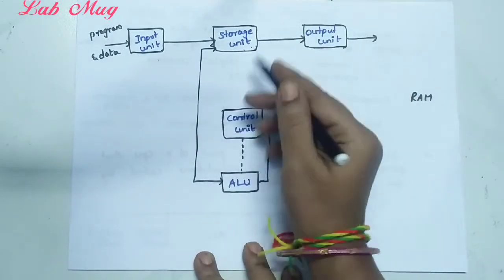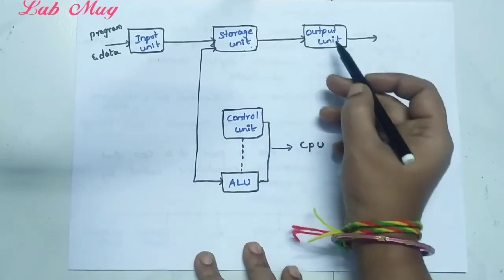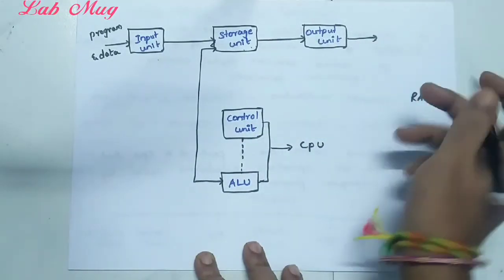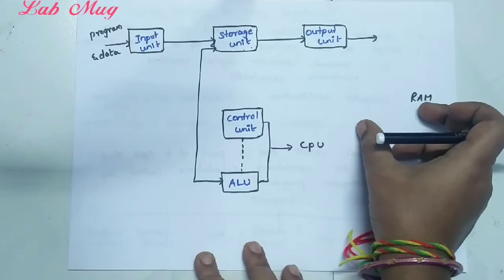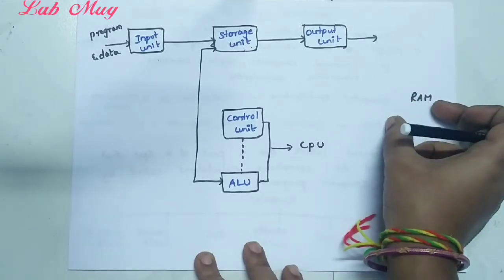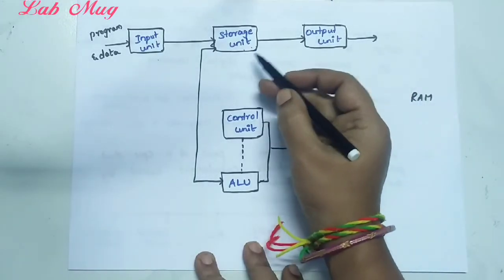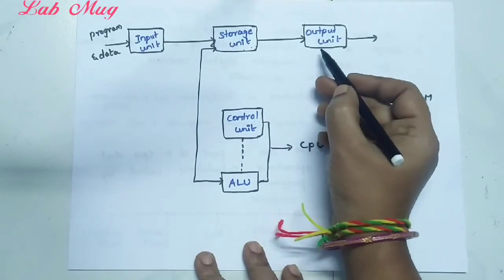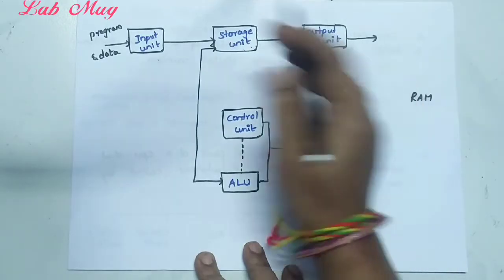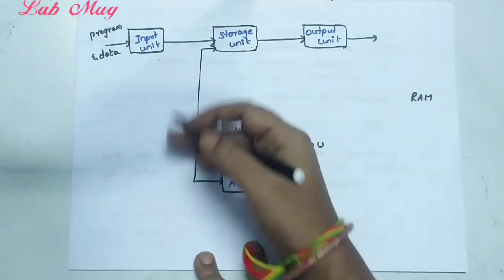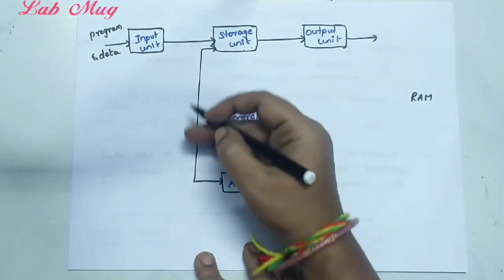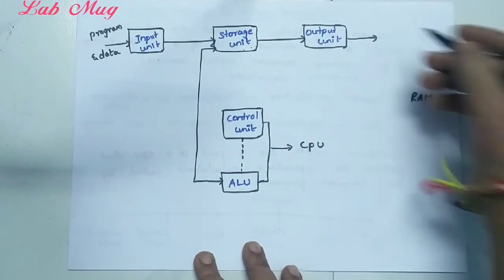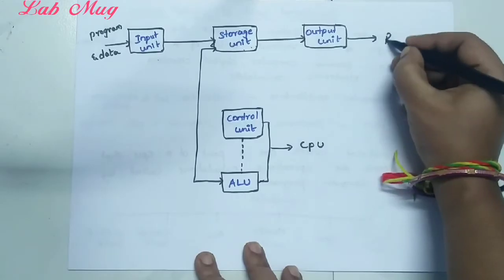After the storage unit receives the processed result, after processing the data, it is going to the output unit. The output unit receives the final result.